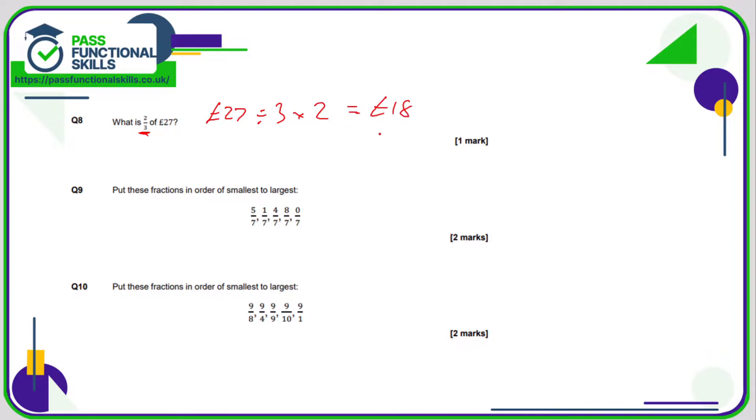Question number nine: put the fractions in order smallest to largest. Note that all the fractions have the same bottom number, so all we need to do is as simple as just putting the top numbers in order. So the smallest is zero seventh, then one seventh. Imagine these were test scores: zero out of seven is less than one out of seven.